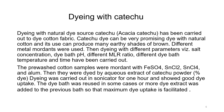Now let us start one by one dyeing cotton with natural dyes. The first dye chosen is catechu, available from Acacia catechu, which is the botanical name of the plant. Catechu dye can be a very promising dye with natural cotton and its use can produce many earthy shades of brown. Different metal mordants were used, with dyeing carried out under different parameters like salt concentration, dye bath pH, different MLR ratio (material to liquor ratio), different dye bath temperature and time.